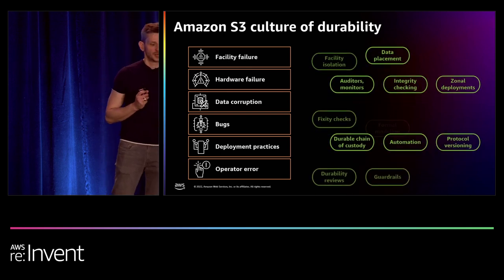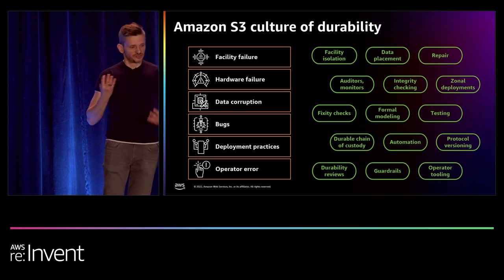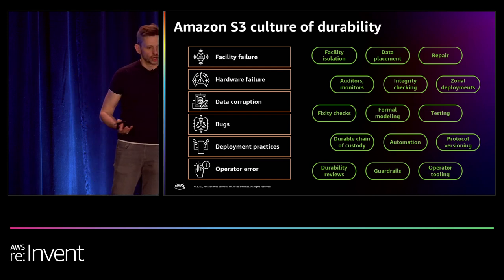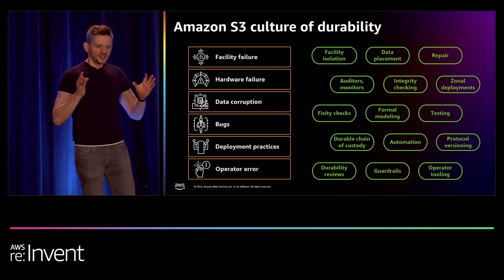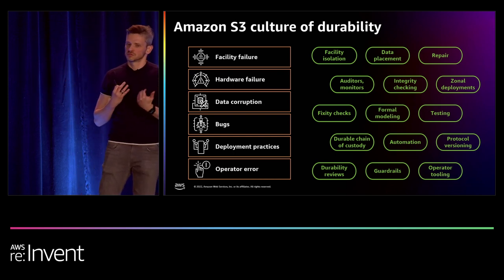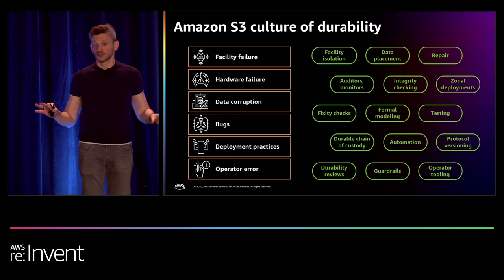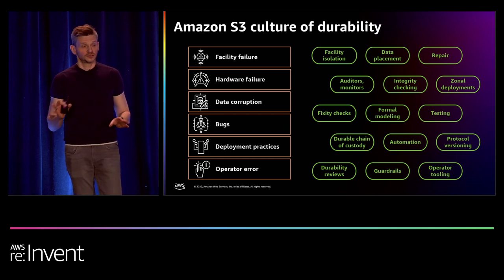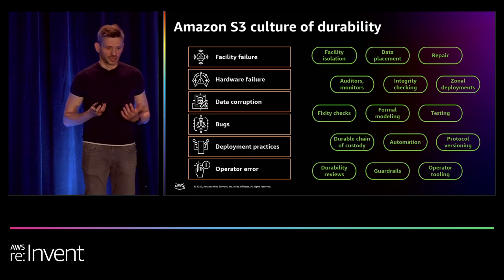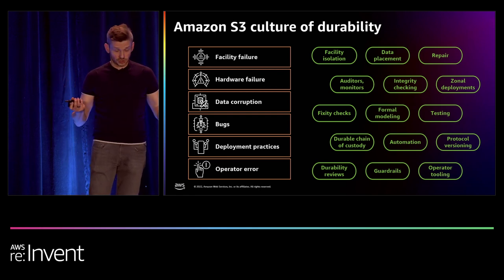There are a variety of mechanisms we employ — facility isolation, repair, guardrails, automation, and so on. This thread model building process and creating mechanisms based on the threat model is universal. It doesn't need to apply to Amazon S3 or to durability — it can apply to just about any cross-cutting or specific characteristic of a system you'd like to continuously maintain. You can use a very similar process within your own software development cycle.